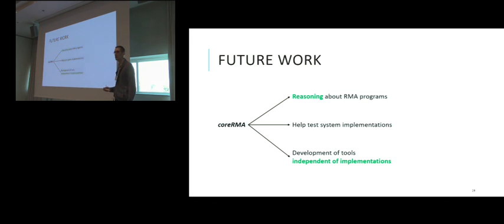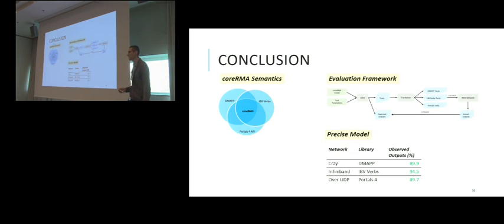Given this new weak memory model that we introduced, it opens new opportunities for research. As future work, we can, for example, automatically reason about RMA programs to infer which flushes are necessary or which flushes are redundant such that certain specifications are satisfied, and also it helps test current implementations of the systems. Our contribution is this new memory model for coreRMA systems and the evaluation framework which automatically generates tests and compares our model with existing networks. We observed that the model and the network behaviors correspond quite well. Thank you, and I'm open for questions.